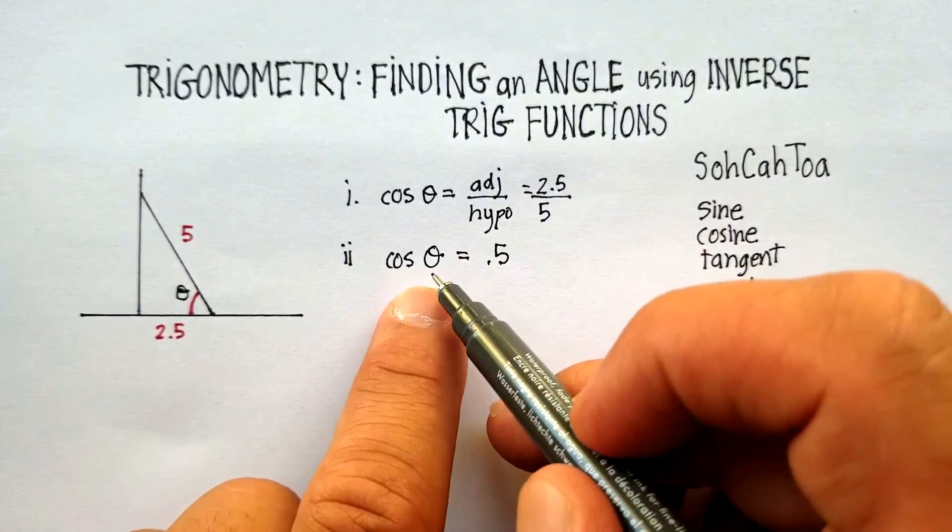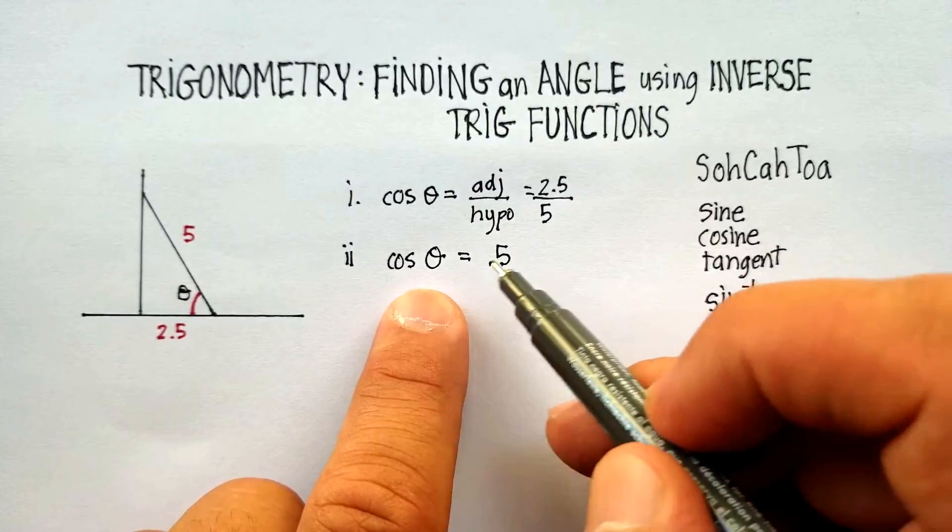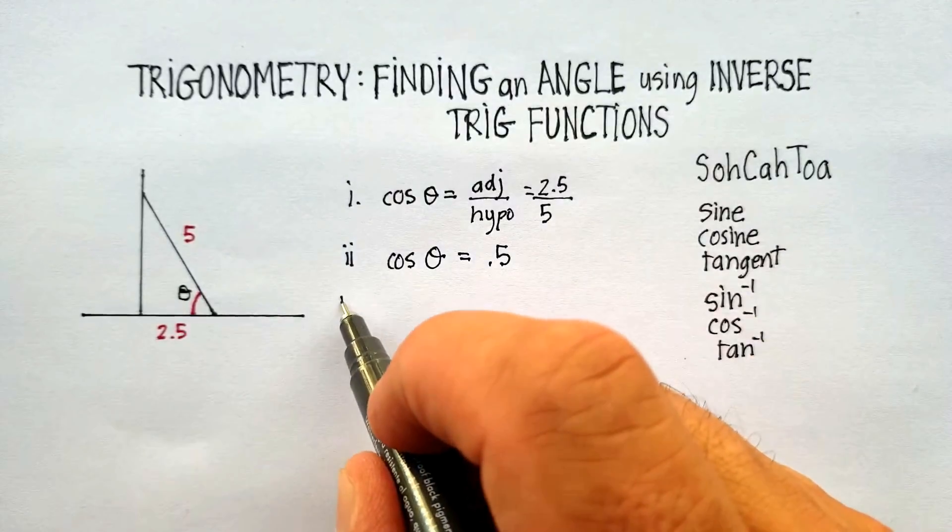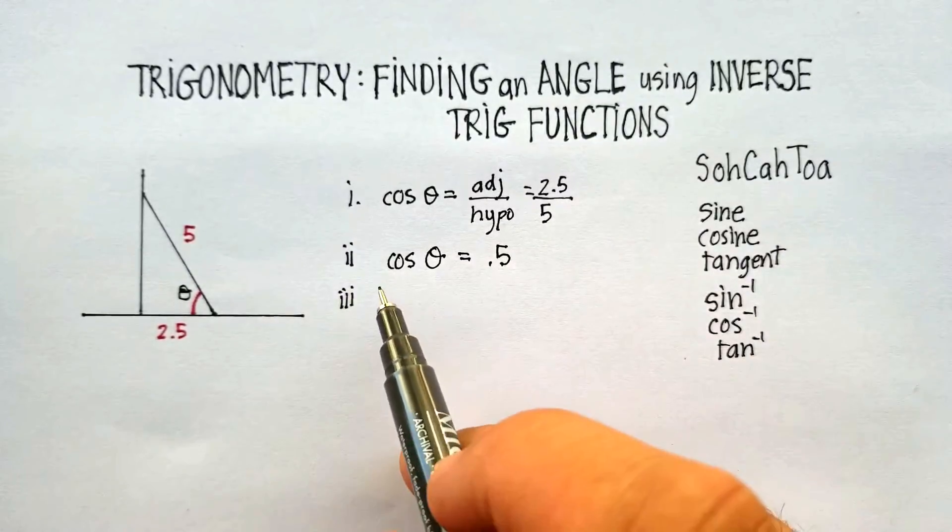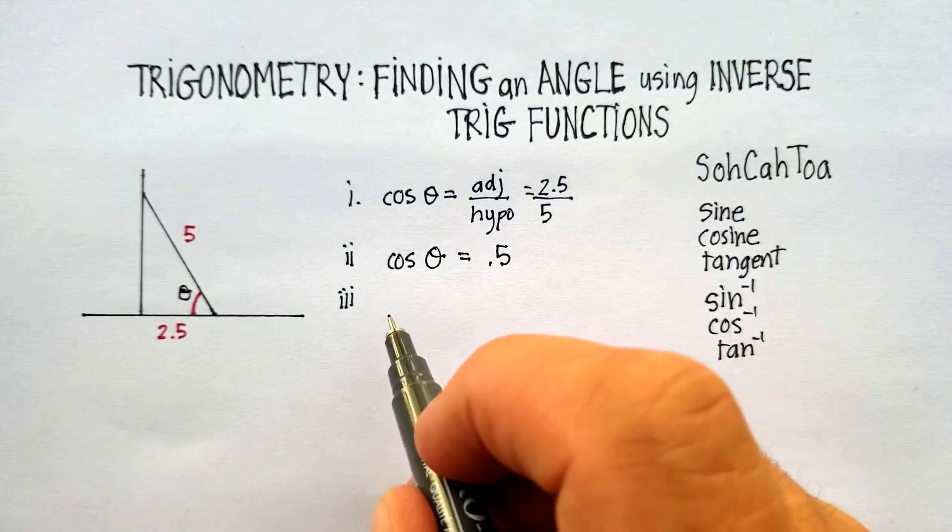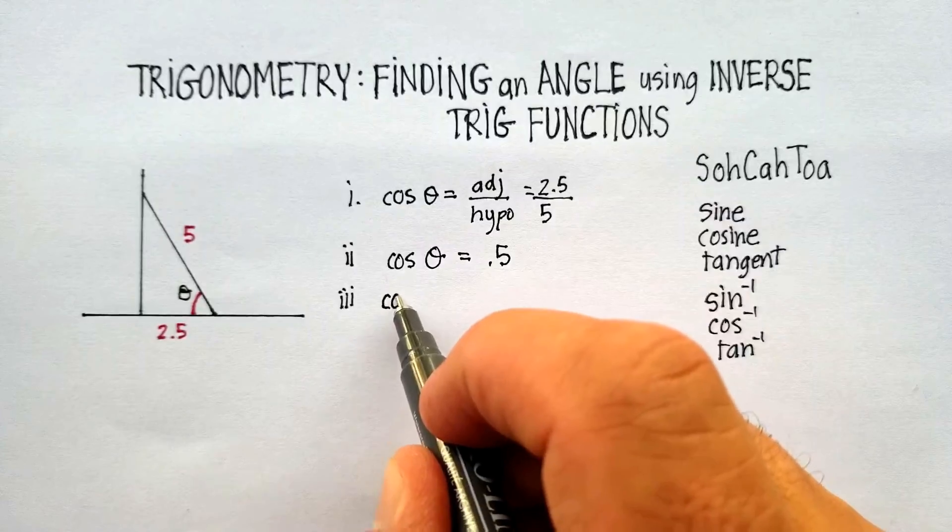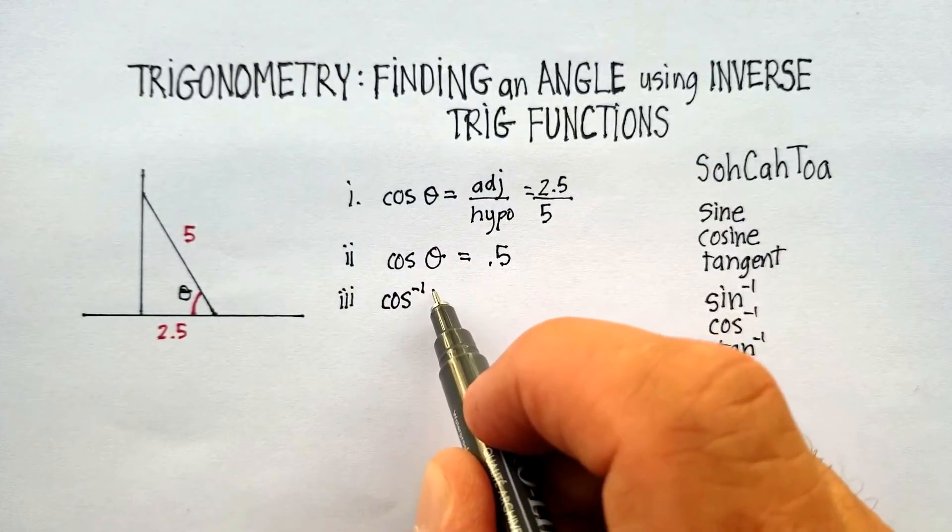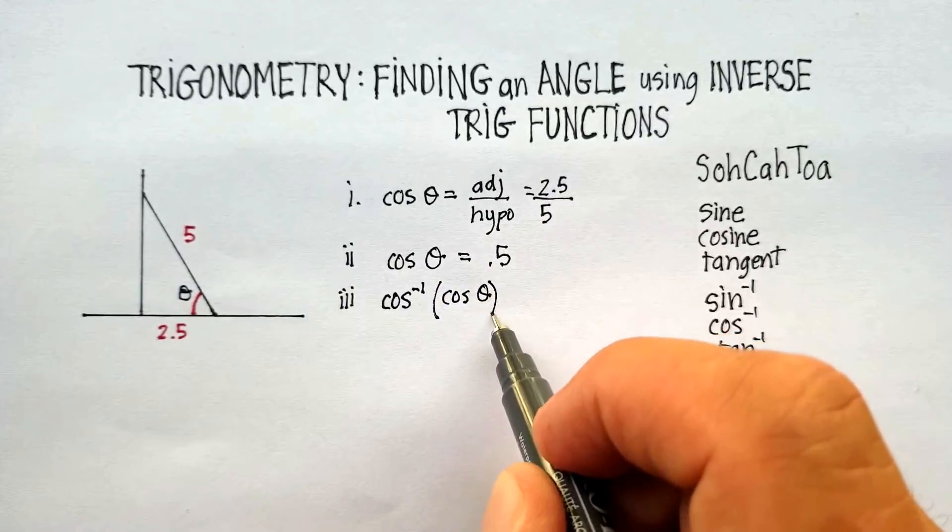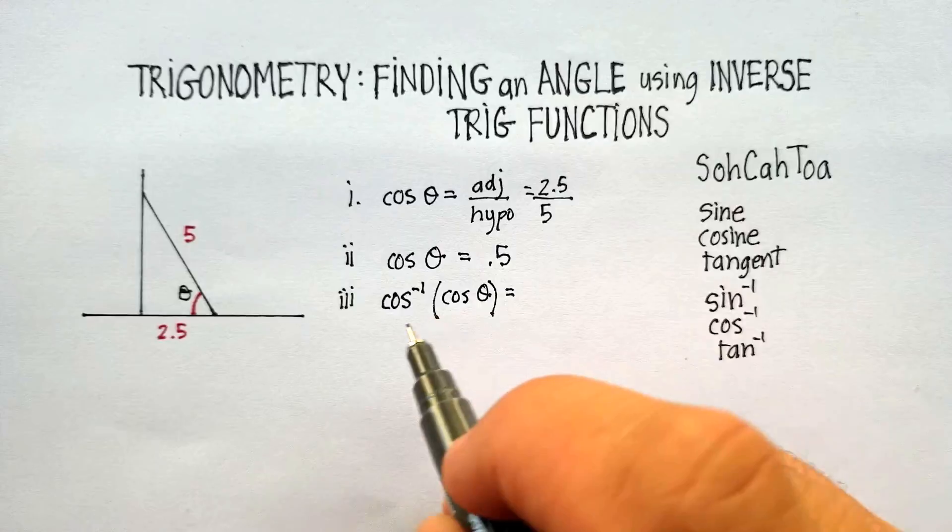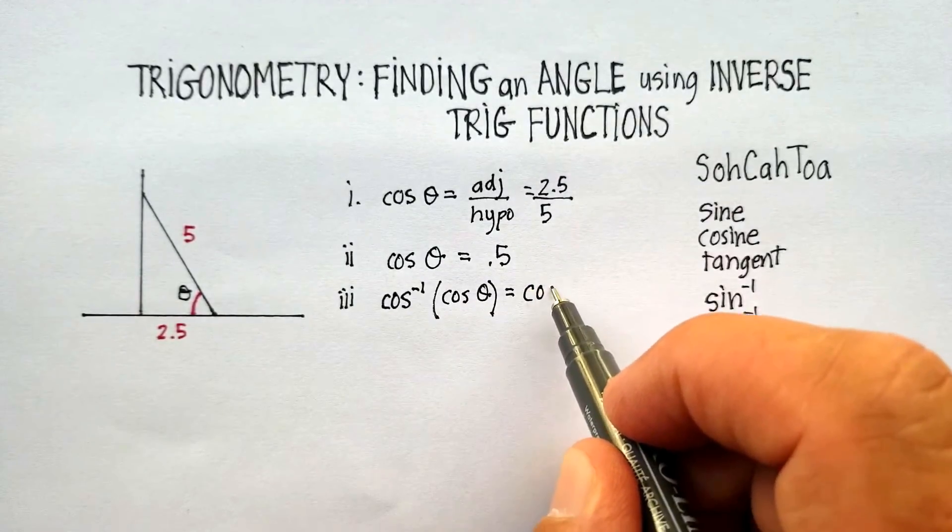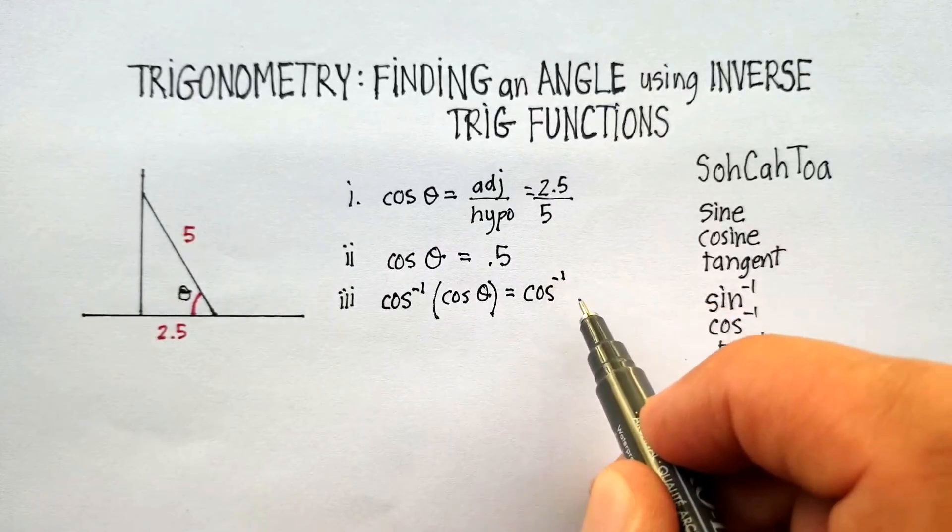Now, we'd be able to get the angle if we knew how to work backwards. And this is where the inverse trig function comes in. So in my step 3, what I'm going to do is I'm going to multiply both sides by the inverse cosine. Now, let me show you why. So here I have inverse cosine times cosine theta, and then this side, remember what you do to one side, you do to the other. That's just regular algebra. I'm going to say inverse cosine of 0.5.